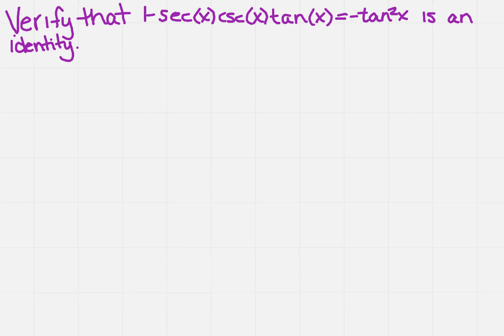Verify that 1 - sec(x)csc(x)tan(x) = -tan²x is an identity. Now, remember the easiest way to prove an identity is to make one side of your equation, like for instance the left side of this one, equal to the right side.